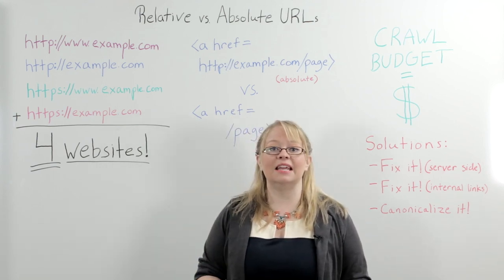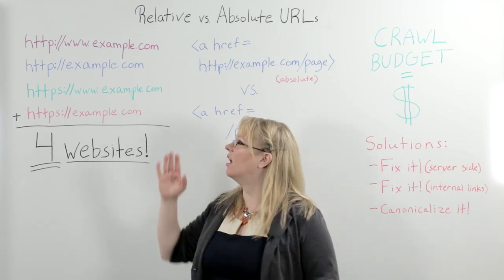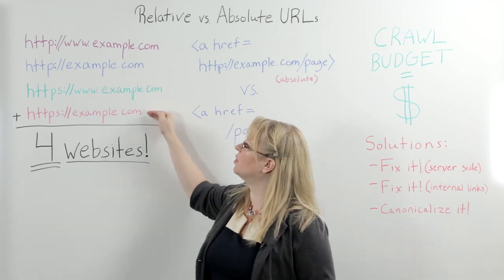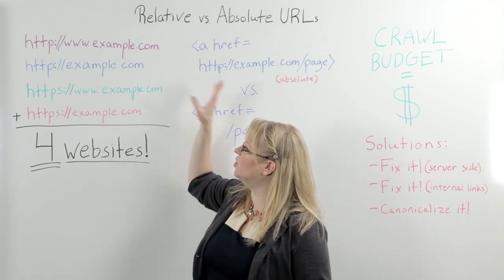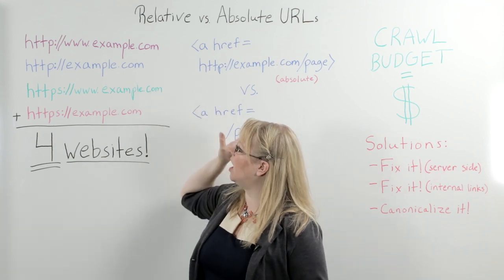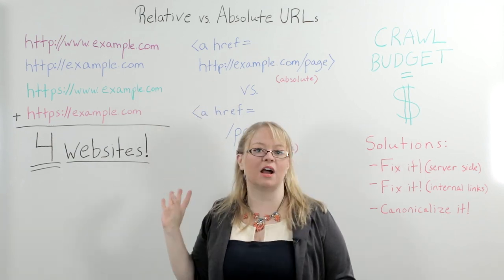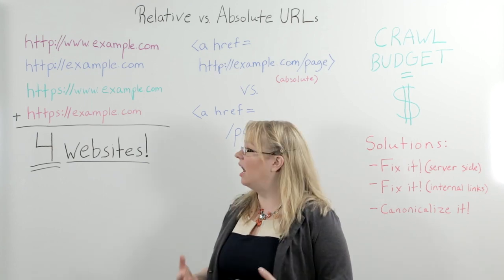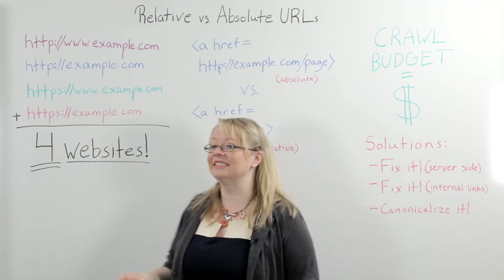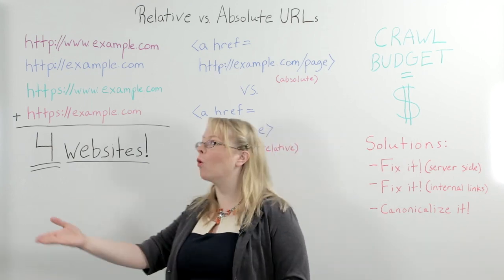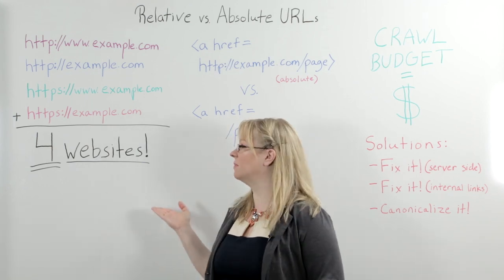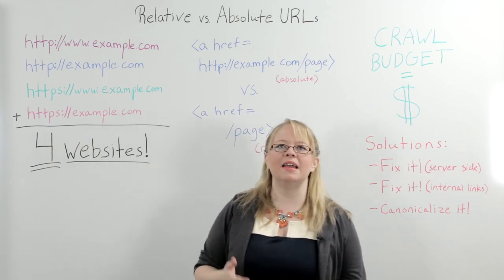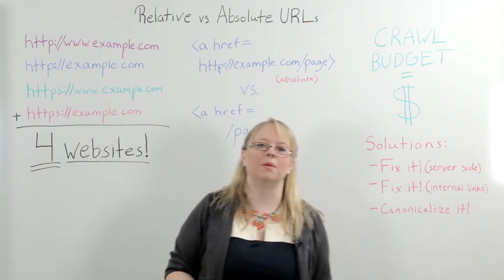What this can mean is if all four of these URLs resolve without being forced to resolve to a canonical version, you can, in essence, have four versions of your website out on the Internet. And this may or may not be a problem.